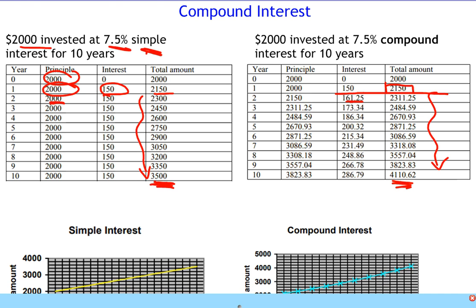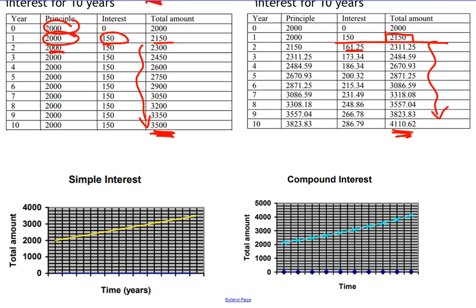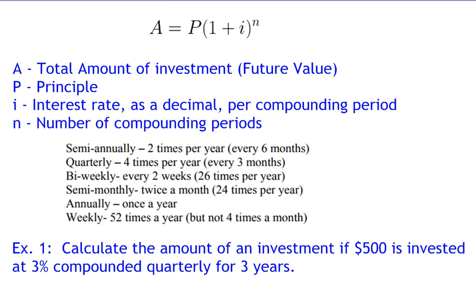Before we do that, let's have a quick look at a graph showing the growth over time. Simple interest grows by the same amount every time — we get a graph that is a straight line, it's linear. Whereas with compound interest you can see there's a bit of a curve, and if we extend that even further the curve starts to grow more and more. That's the power of compound interest — the longer you invest, the more money you actually get.